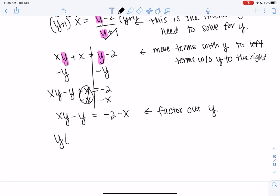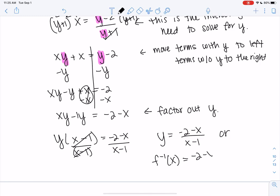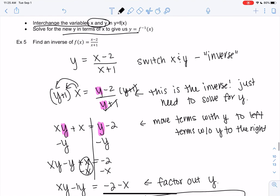Factoring out y: y times (x minus 1) equals negative 2 minus x. We're almost there—just divide by (x minus 1). And that's my inverse. We finally solved for y. You can write y equals, or you can say f inverse of x equals, and so that's the inverse of this.